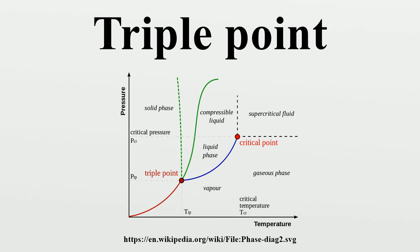Triple point of water: the single combination of pressure and temperature at which liquid water, solid ice, and water vapor can coexist in a stable equilibrium occurs at exactly 273.16 K and a partial vapor pressure of 611.73 pascals.